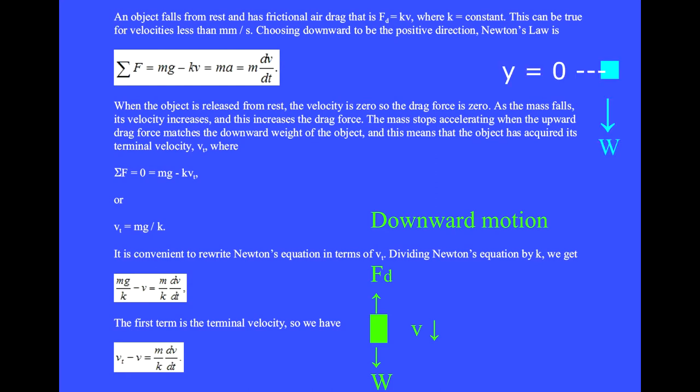When the object is released from rest, the velocity is zero, so the drag force is zero. As the mass falls, its velocity increases, and this increases the drag force. The mass stops accelerating when the upward drag force matches the downward weight of the object. And this means that the object has acquired its terminal velocity,